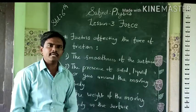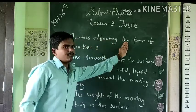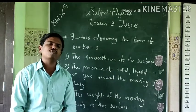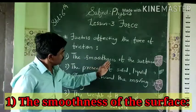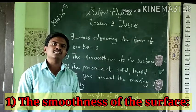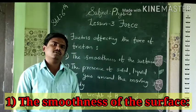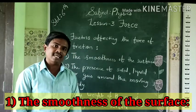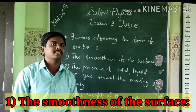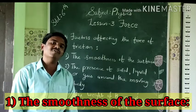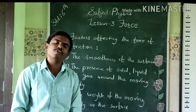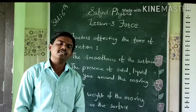Another topic is factors affecting the force of friction. Generally, there are three factors which affect the force of friction. First, the smoothness of the surface. The force of friction is always greater between two rough surfaces — for example, the surface of tires and the surface of the road have more friction because these two surfaces are rough. But the force of friction is always less between two smooth surfaces — for example, the force of friction between two ice surfaces is very less.